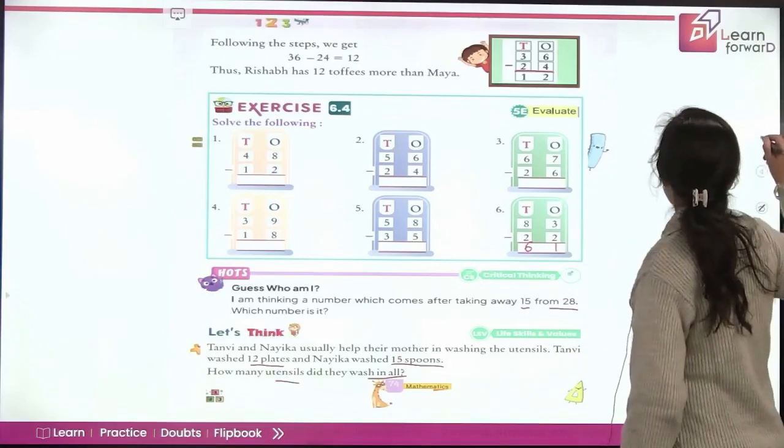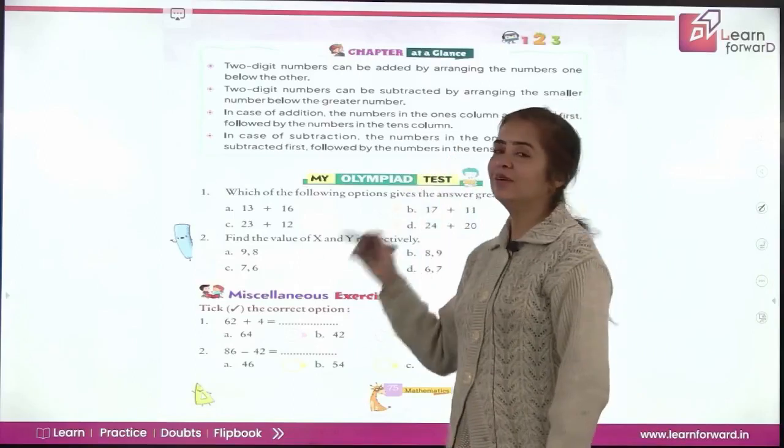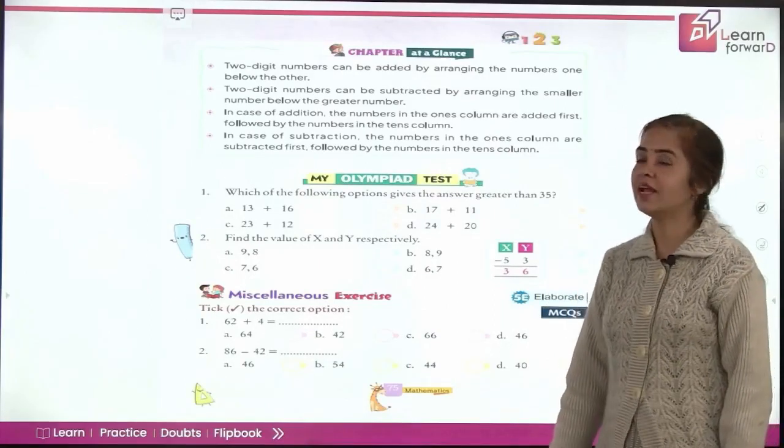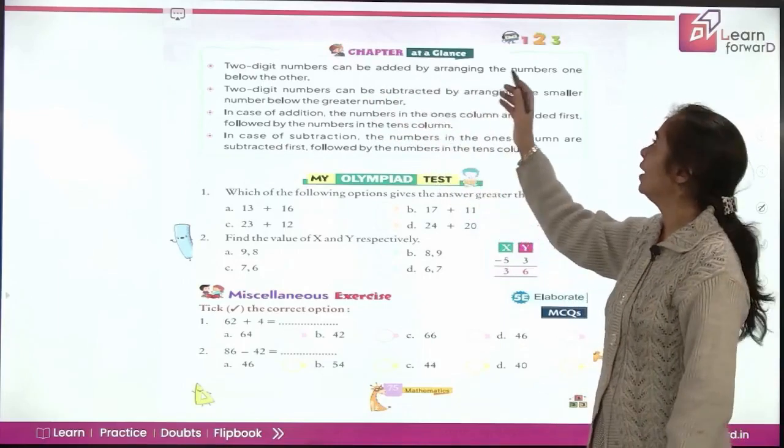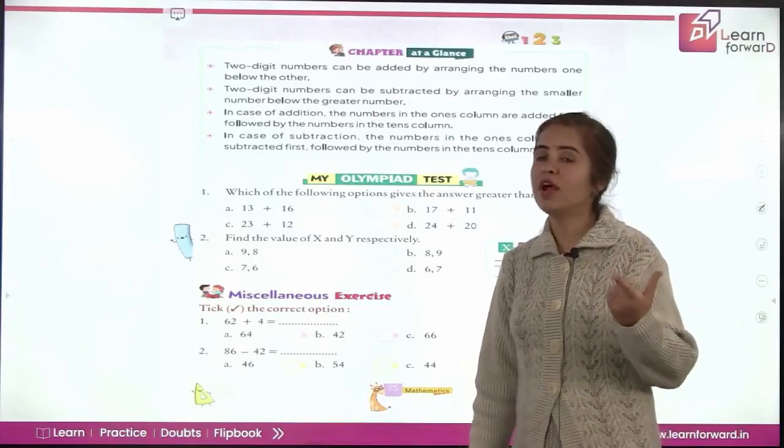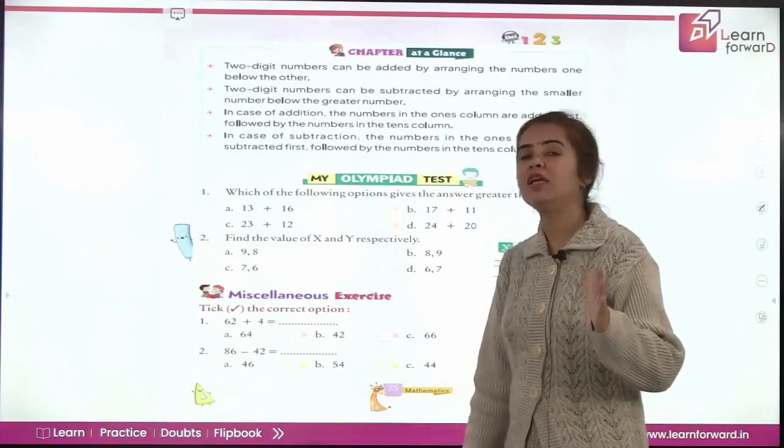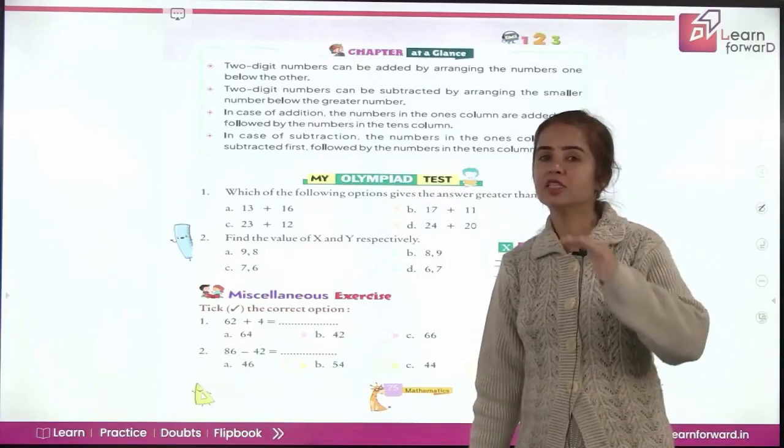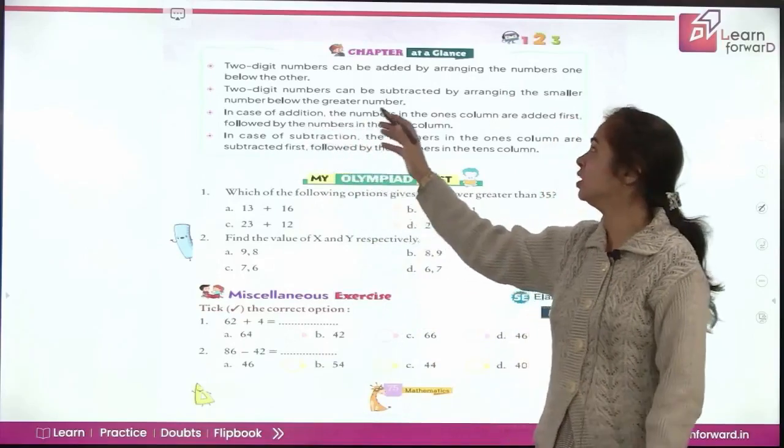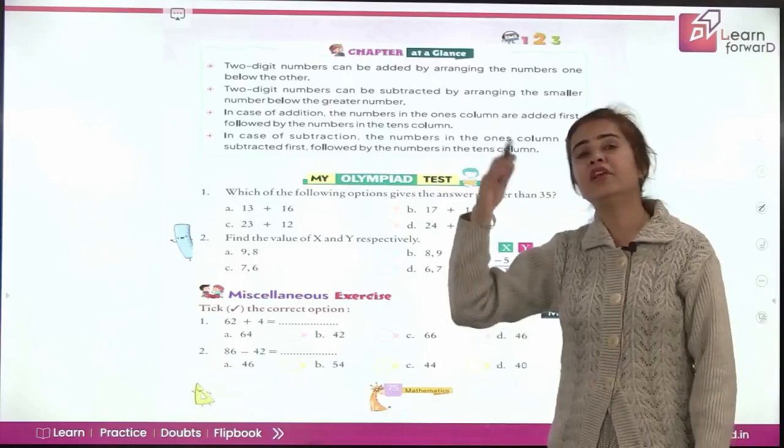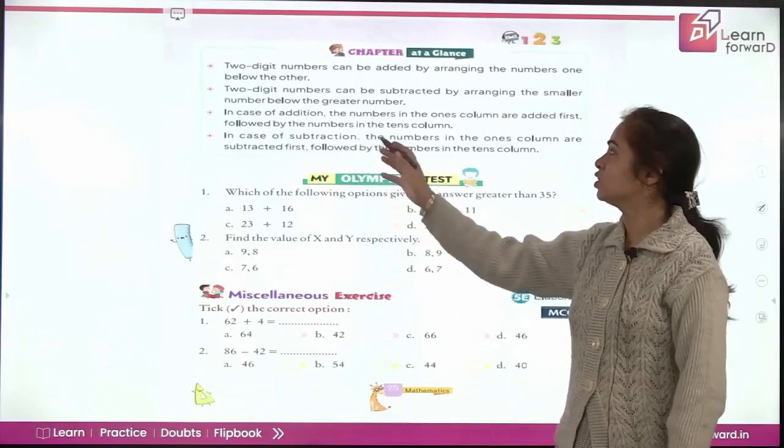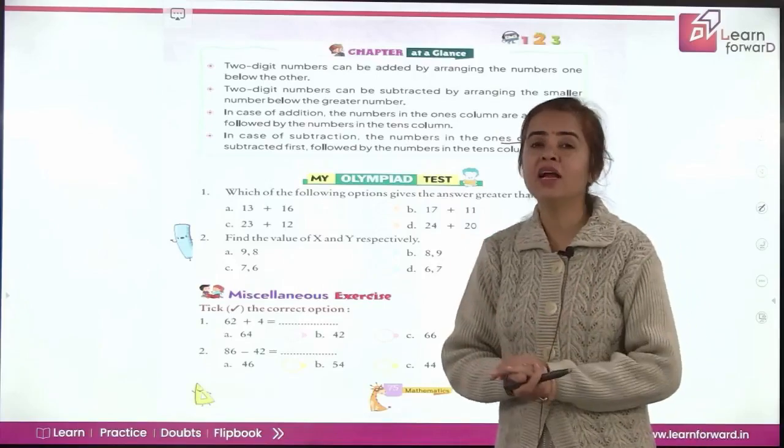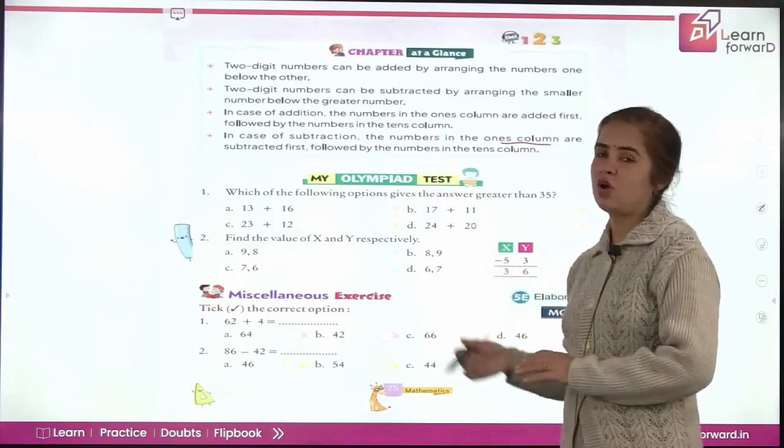Let's think Tanvi and Naika usually help their mother in washing the utensils. Tanvi washed 12 plates and Naika washed 15 spoons. How many utensils did they wash in all? So together how many utensils did they wash? What will you do? Definitely you are going to add them because they also did it together. So it's good to share the task and help your parents at home. Now it's time for chapter at a glance. So let's quickly recall what we have learnt in addition and subtraction of numbers up to 99 in today's session. Two digit numbers can be added by arranging the numbers one below the other. What you have to remember is write the places, write the digits carefully at their proper places. Now two digit numbers can also be subtracted the same way by arranging the bigger number up and the smaller number below it. In case of addition, the numbers in 1's column are added. Then we move to the addition in the 10's column. And in case of subtraction also we do the same thing. The numbers in the 1's column are subtracted first. So we always start addition and subtraction from the 1's column. This is what we need.